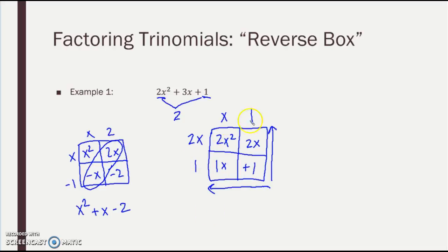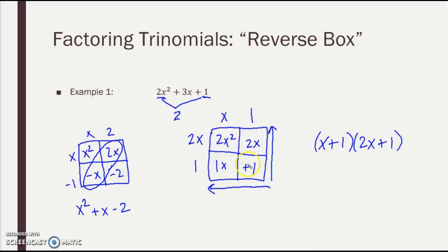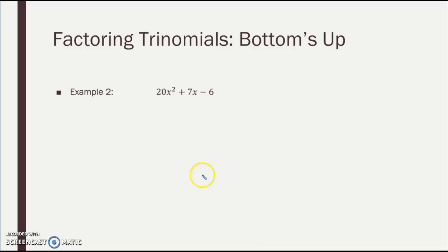Now these are my factors — what normally goes across the top and down the side. So I'm going to have X plus 1 and 2X plus 1. Fill in what you know — your first and last term. Find two terms that multiply to A times C and add to the middle term, then find the GCF working from that bottom corner out.